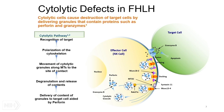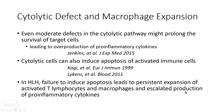It has been shown by several groups that even a slight defect in the cytolytic pathway — a slight delay in the killing — may lead to increased production of inflammatory cytokines by both the effector cell and the target cell. It has also been shown that cytolytic cells can induce apoptosis of overly activated immune cells. Based on these observations, it has been postulated that in HLH, a failure to induce apoptosis leads to persistent expansion of activated T lymphocytes and macrophages, escalating production of pro-inflammatory cytokines and causing a cytokine storm.